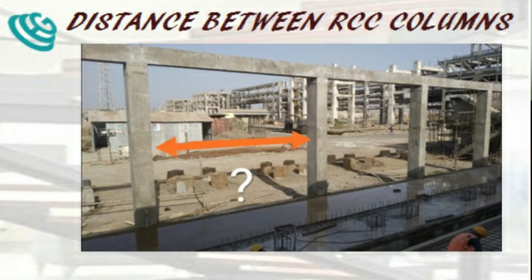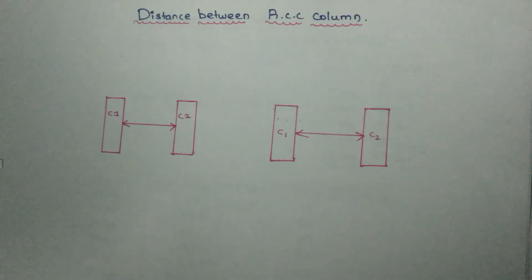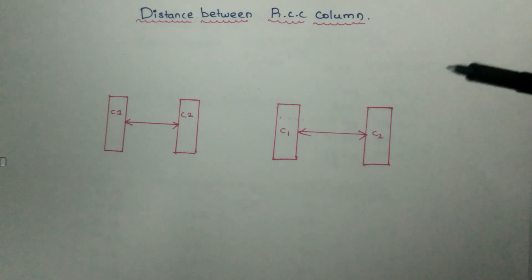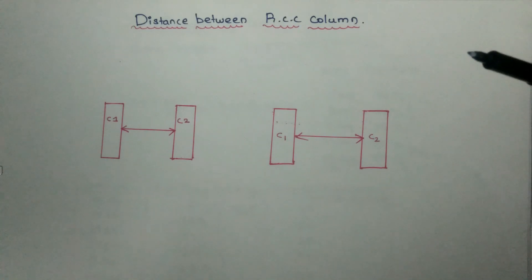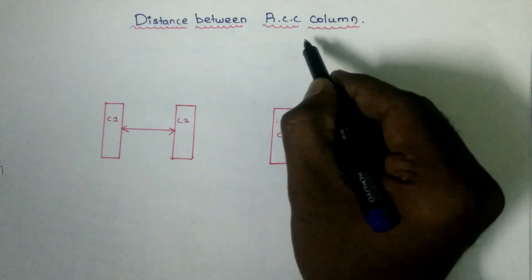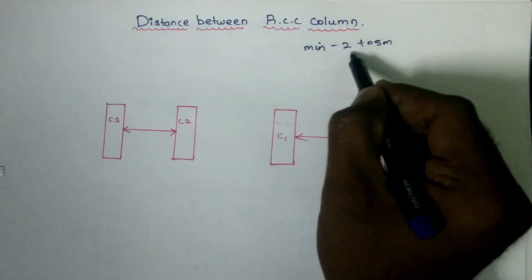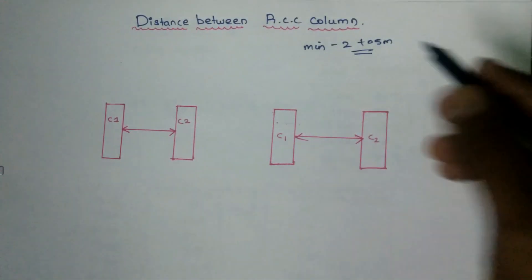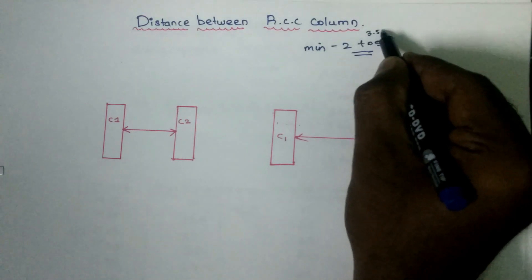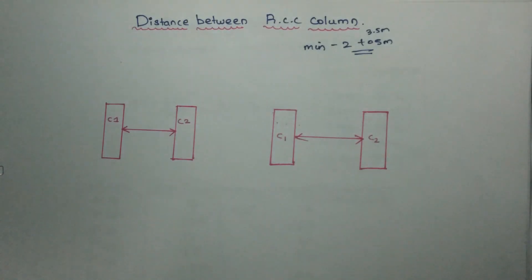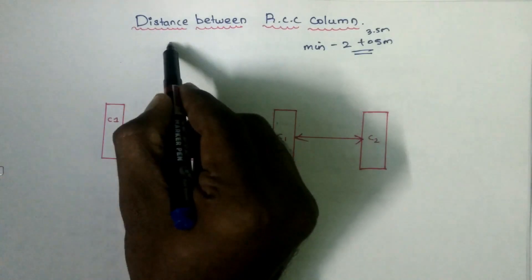Now we will see the distance between RCC columns. This is not a standard rule. If we see the thumb rule, the minimum distance is 2 to 5 meters. The distance between RCC columns depends on various factors we will examine.